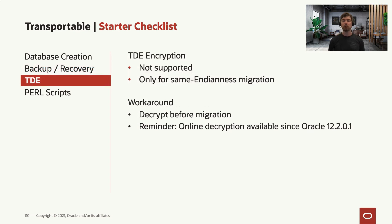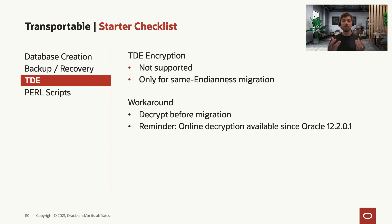Now talking about encryption. Unfortunately, tablespace encryption is not supported when you are going cross-endianness. The reason is that RMAN doesn't know how to convert from big-endian to little-endian or the opposite while your tablespaces are encrypted. So if you're going to the same endianness, this is fine. But if you're going cross-endianness, you need to decrypt before migrating, and then you can encrypt back after you are in your target environment.